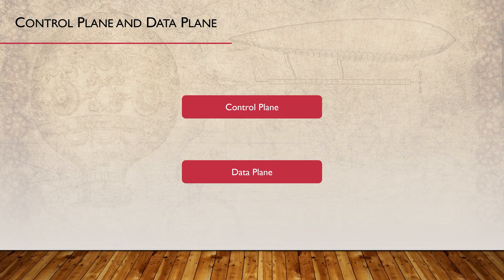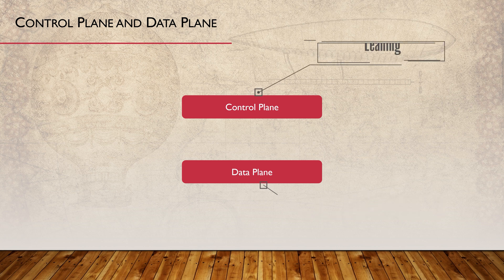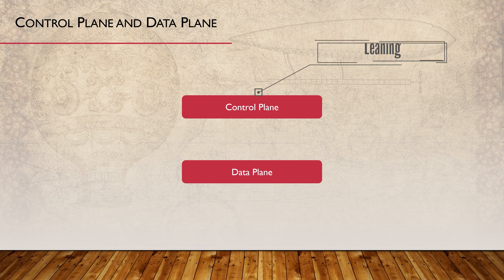So what are the control and data planes? To put it simply, each network device is separated into two logical parts. One part, called the data plane, focuses on forwarding traffic from one location to another. The other part, called the control plane, is responsible for managing traffic sent to or from the device. This includes routing protocol traffic, management traffic, and so on.